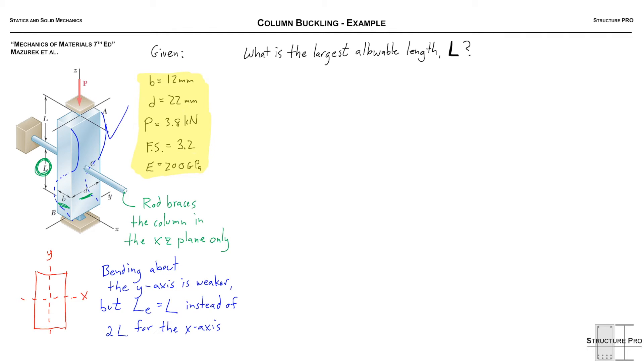In other words its effective length is half as it would have been without that rod. All right good talk. So now let's start putting the pieces together to solve this.